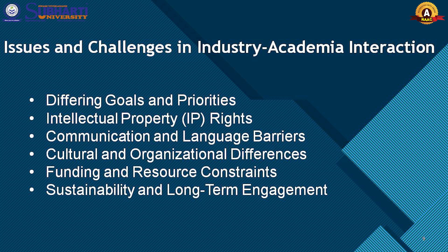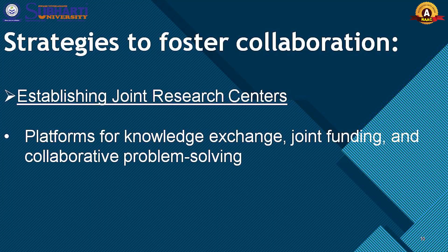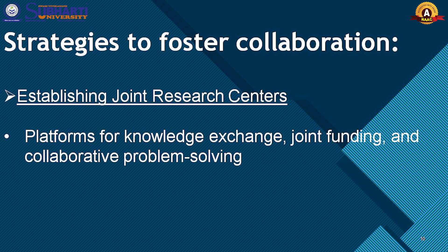With concerted efforts and a shared commitment, industry and academia can flourish, leading to mutual benefits and advancements in various fields. Moving to the strategies to foster collaboration. Establishing joint research centers is a key factor to ensure effective industry-academia interaction. It is important to establish strong partnerships and create an enabling environment. Academic institutes and industry partners can set up joint research centers or innovation hubs to promote collaborative research projects. These centers serve as a platform for knowledge exchange, joint funding and collaborative problem solving.